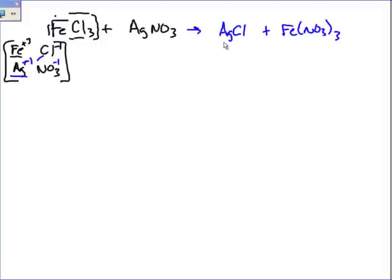Now we have to balance this equation, because you can't do a stoichiometry problem without a balanced equation. Somebody come balance this equation. There's three Cls on the left side and only one Cl on the right side — that is correct, so come up here and fix it.